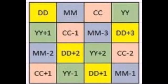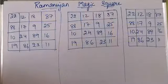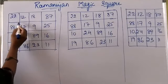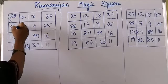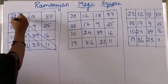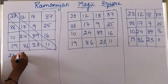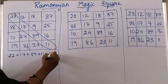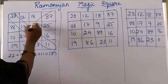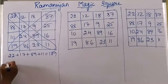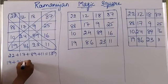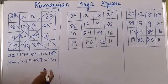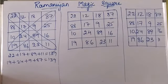Now we will see the diagonals. The sum of diagonal numbers: 22 plus 17 plus 89 plus 11 also gives you 139. Coming to the other diagonal: 19 plus 24 plus 9 plus 18 also gives 139. This is common in any magic square.